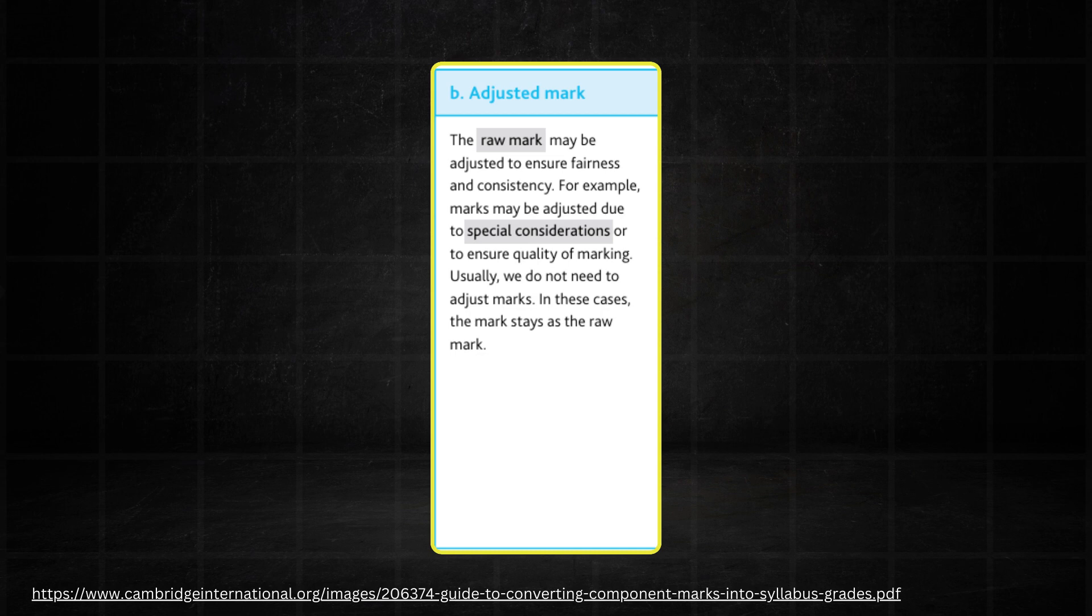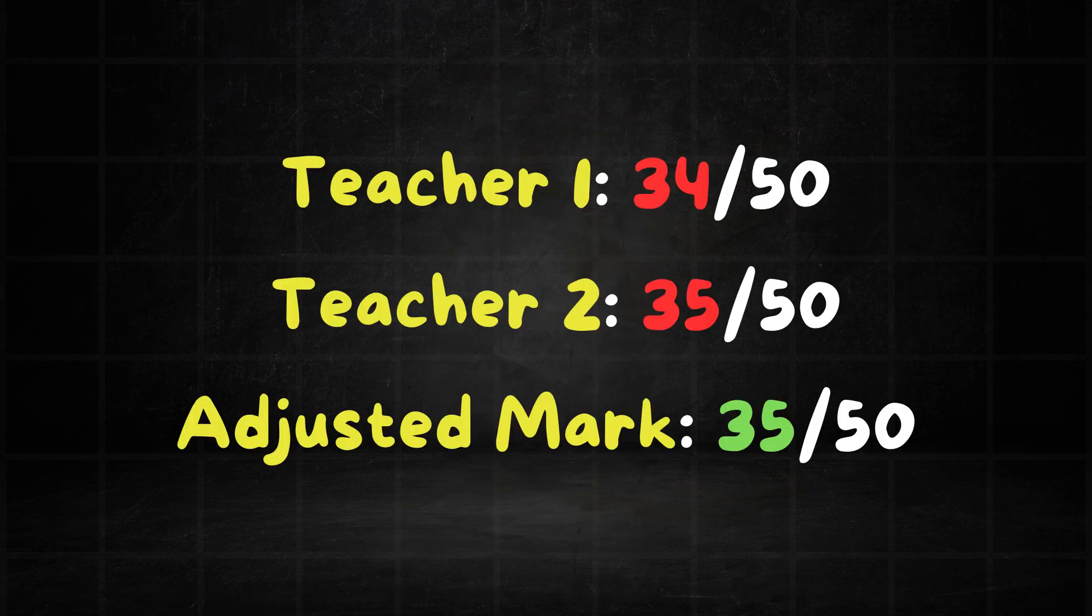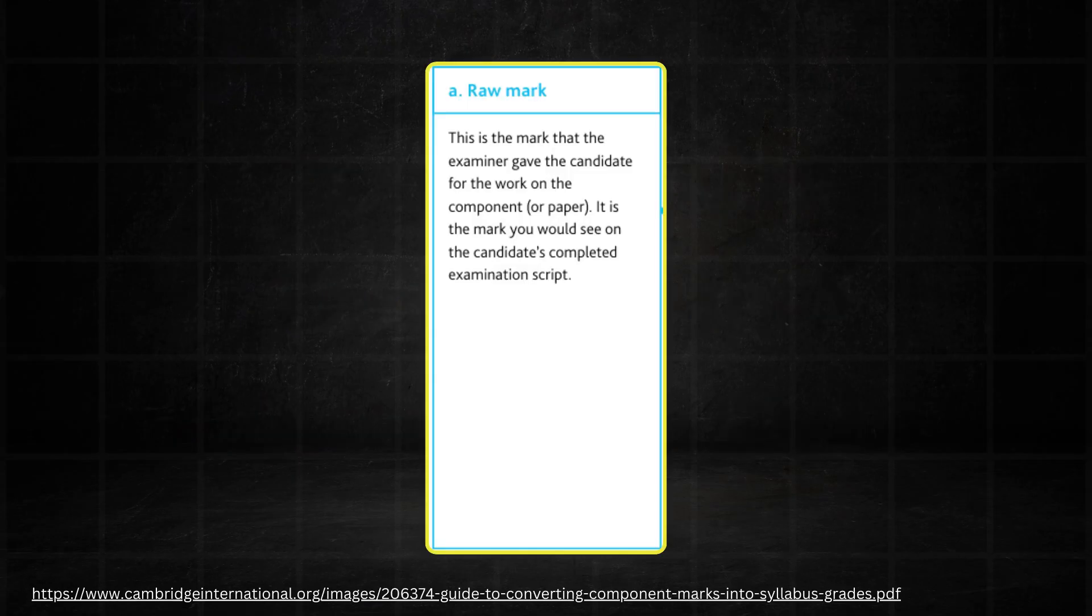These raw marks are then adjusted to ensure fairness and consistency to give you your adjusted mark. For example, two teachers may mark the same script slightly differently, and so sometimes the marks have to be adjusted to cater for this. But in most cases, the raw mark remains as it is.